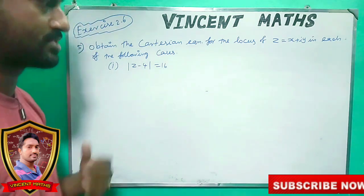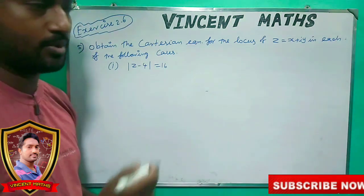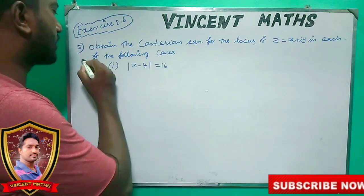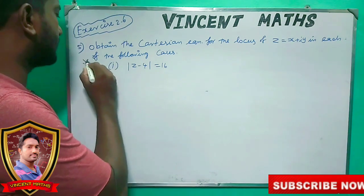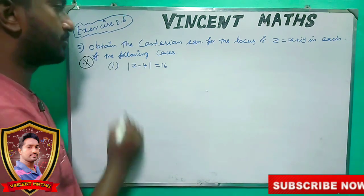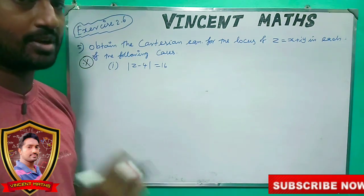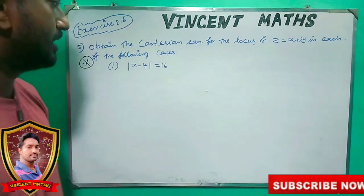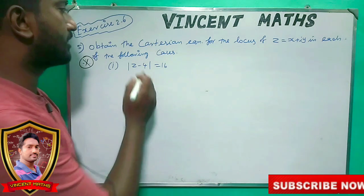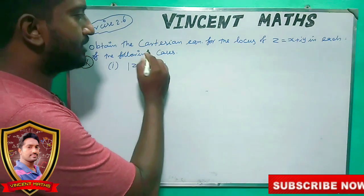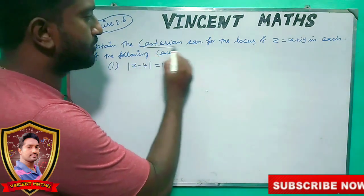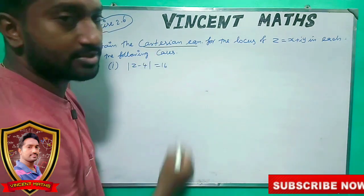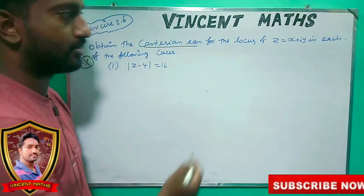We can do this in x is 2.6, in 3 marks, in k and wipe. Now what we do is to update the Cartesian equation. We can do this in the Cartesian equation.